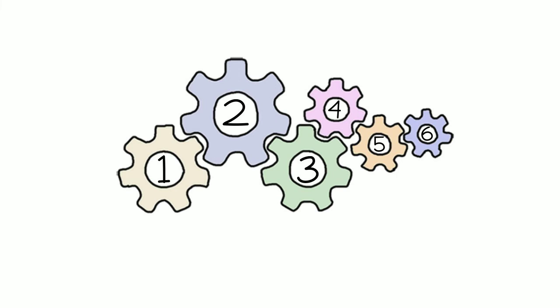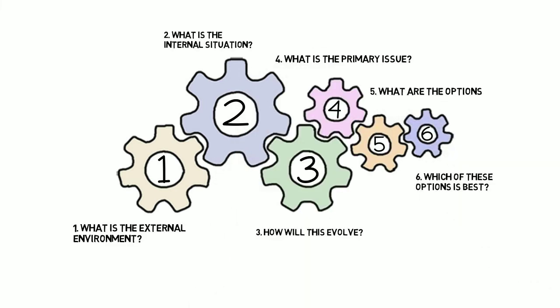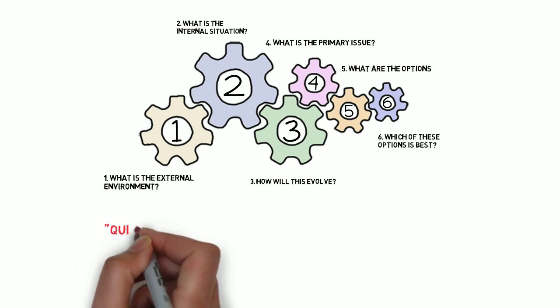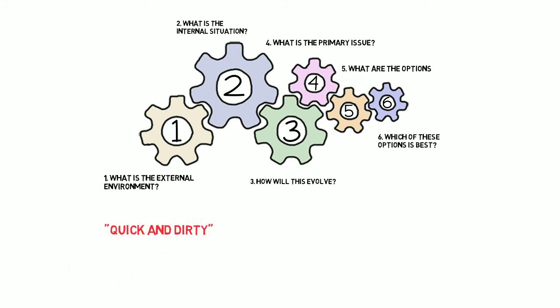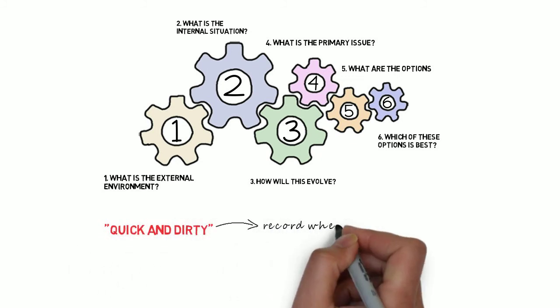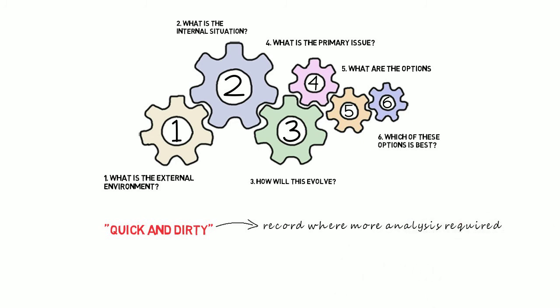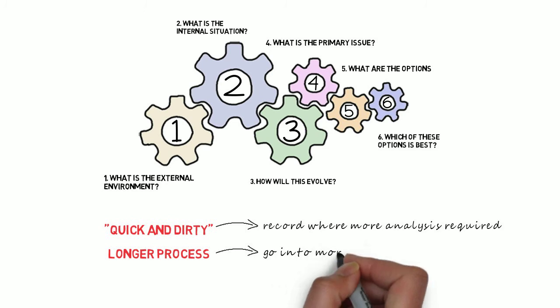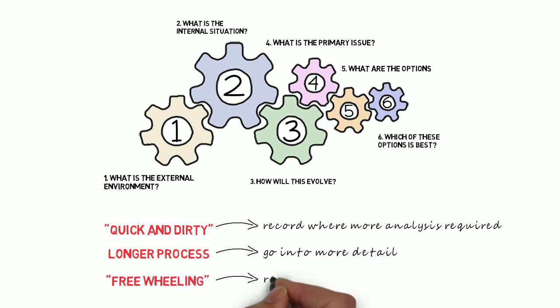You can use the framework to make sure that this bouncing around doesn't get too chaotic. One approach is what I call the quick and dirty, where you have a short discussion of each question in turn, recording where more data analysis and debate is required. Or you can use it to plan out a longer process for researching and developing the strategy in more detail. Or you can use it to manage a more freewheeling strategic discussion, reminding everyone of what questions the group should be focusing on and recording answers as you go.